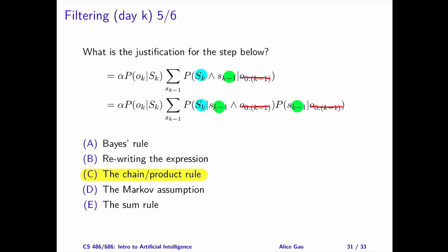The correct answer is C, the chain rule or the product rule. This is easier to see if we cross out the last value, O sub 0 up to k-1, which appears in all three terms. We use the product rule to write the probability as a product of two probabilities.